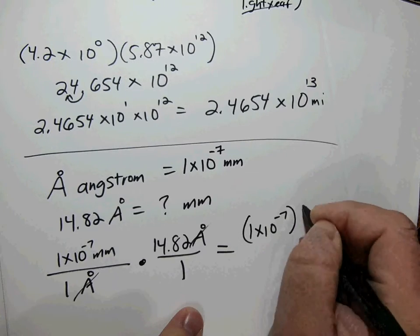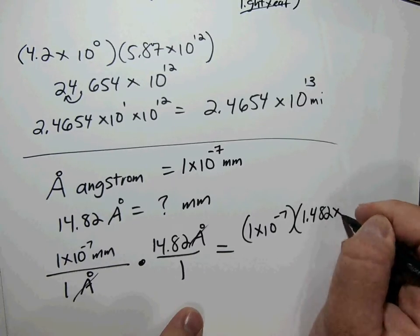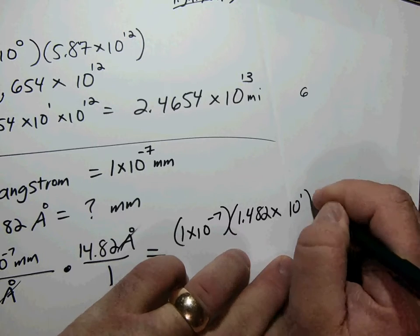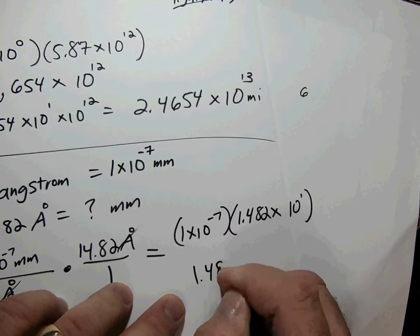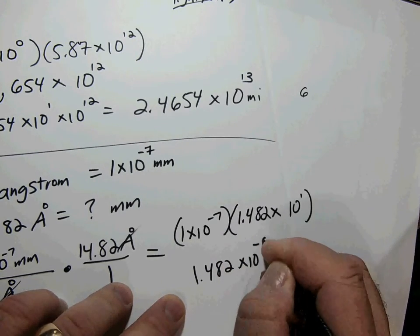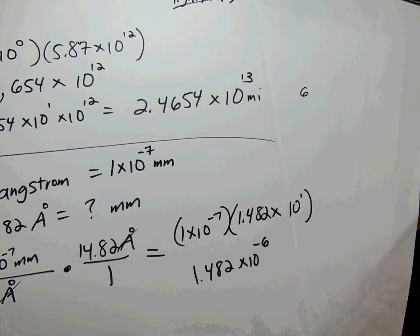To make ourselves comfortable in scientific notation, we write 14.2 as 1.42 times 10 to the 1. Multiplying the coefficients gives 1.482, and adding the exponents — positive 1 and negative 7 — gives 10 to the negative 6. The result is 1.482 times 10 to the negative 6 millimeters.